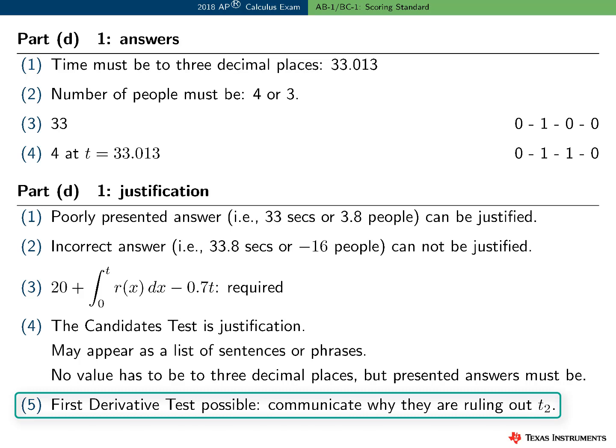At the AP Calculus reading, an actual briefing for scoring a free response question usually takes approximately 75 minutes, with additional time in the reading rooms for discussion before scoring begins. I hope this summary video gives you a good idea of how this question was scored. As a reminder, there are lots of valuable resources on the TI website, including material involving technology and calculus, classroom activities, and calculated tips and tricks for test success.